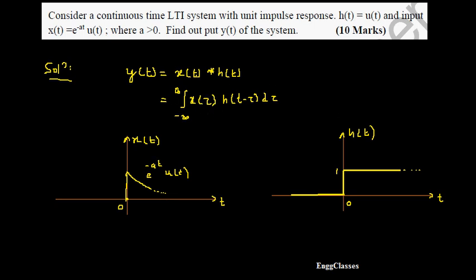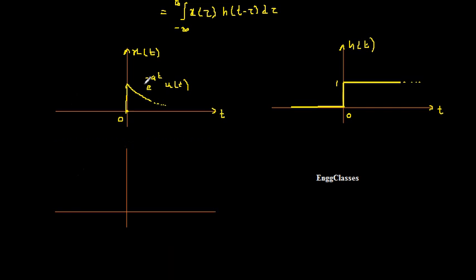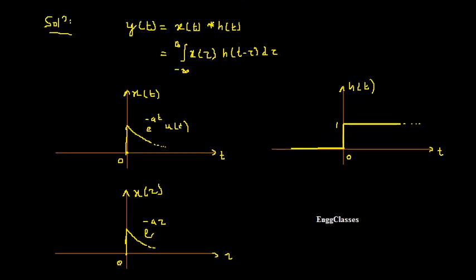As per the convolution formula I need x(τ) and h(t−τ). To get x(τ), I simply replace t with τ in x(t), so the shape of the signal remains the same — it is still a decaying exponential e^(-aτ)u(τ), with the signal starting at 0 and being 0 before that.